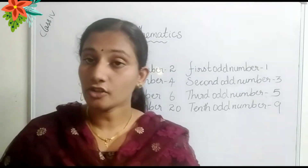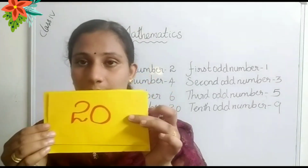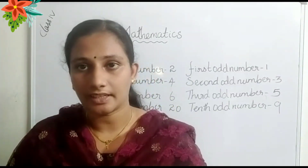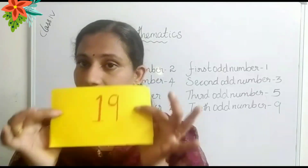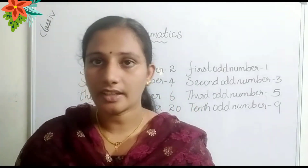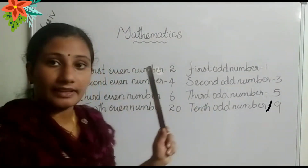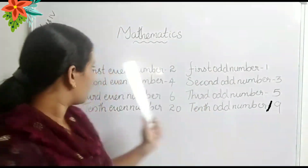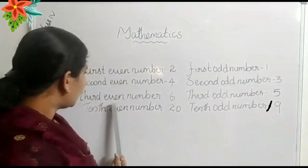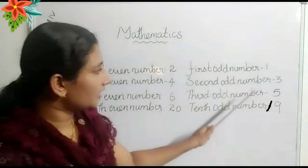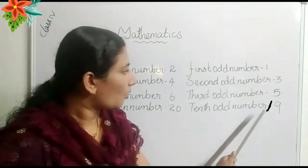Children, do you know which one is the 10th even number? Which one is the 10th odd number? The 10th odd number is 19. Children, look at the board. Second even number is 4, second odd number is 3. Third even number is 6, third odd number is 5. Then 10th even number is 20, and 10th odd number is 19.